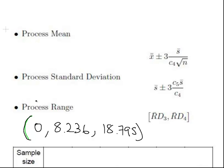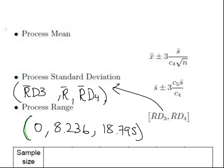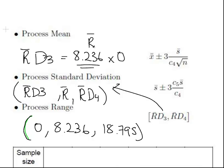This corresponds to R bar D3 and R bar D4. You might notice that D3 times R bar gives you 0, but we know R bar is not equal to 0. So D3 is equal to 0 because 8.236 times 0 equals zero. D3 necessarily has to be equal to 0.